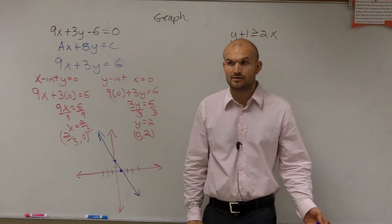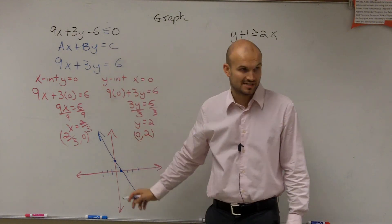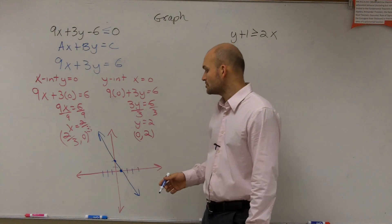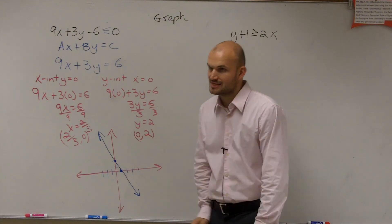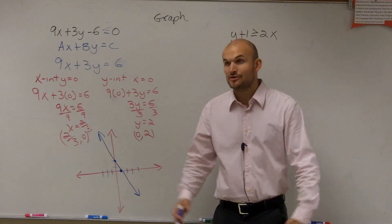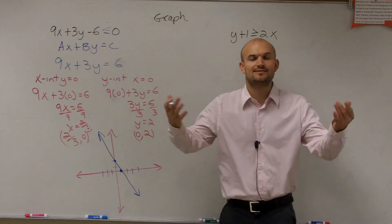Now the next thing we need to do is determine shading, right? This is an inequality, not an equation. So we need to determine shading. So what I'm going to do is I'm going to pick a test point. And the best test point ever to pick, as long as the line doesn't go through it is? Zero. Zero.